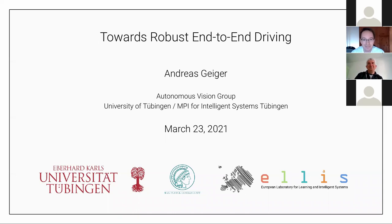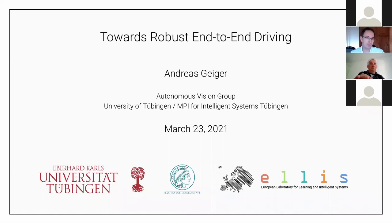Today I'm going to be talking about robust end-to-end driving. My research group focuses on core computer vision problems and on integrating this with robotics. For a long time, computer vision was tied to robotics, but then became its own field. Over the last 10 years, people realized you can't look at computer vision problems independently and hope this will solve downstream tasks like self-driving — you have to tackle these problems jointly.